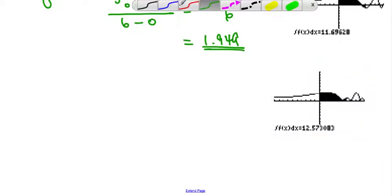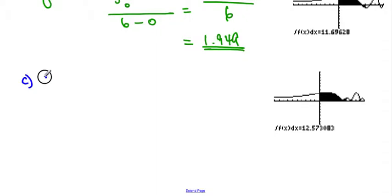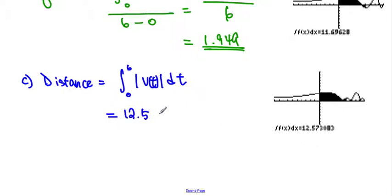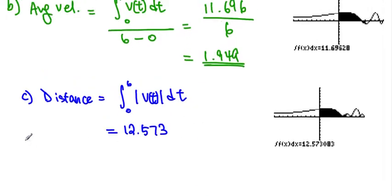So, number C, here it would have been total distance, can be found by integral from 0 through 6 of the velocity, but with the absolute value, dt. Then, here, as you can see, becomes 12.573. Alright.